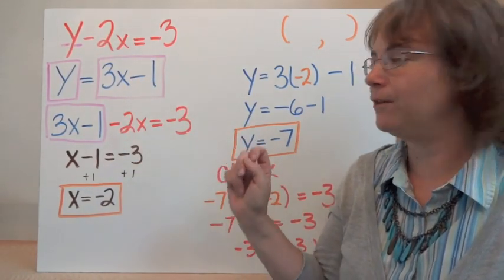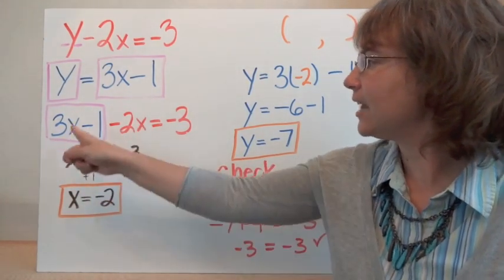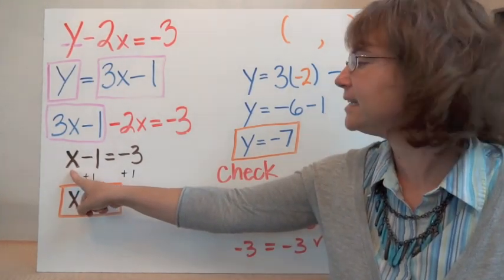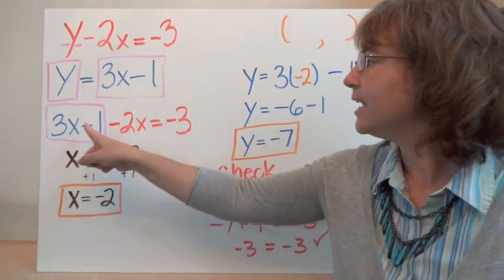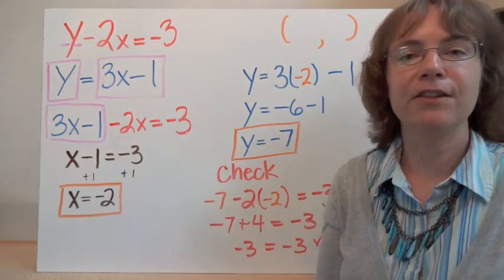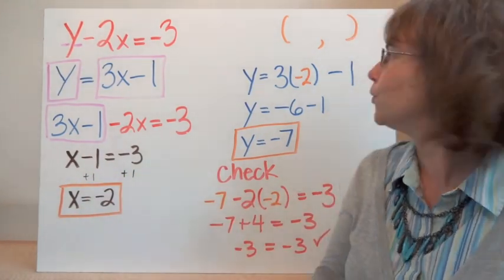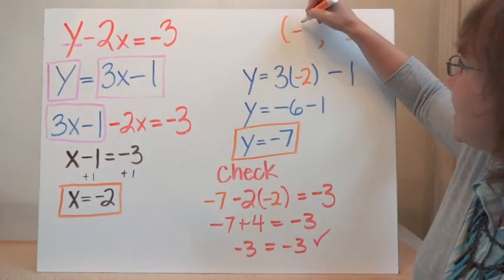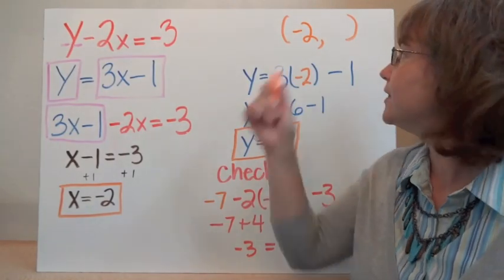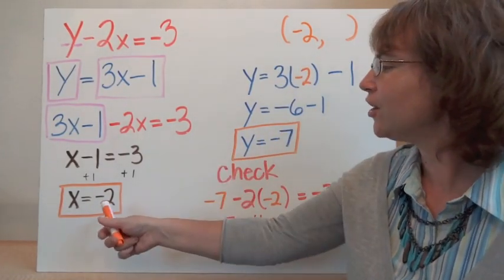Now I have an equation with one variable. I'm going to go ahead and get my x's together by combining like terms. 3x minus 2x gives me a positive x, and then minus 1 equals negative 3. I'm going to add 1 to both sides and I have x is equal to negative 2. So that is my x coordinate — this is the coordinate where both of those graphs cross.